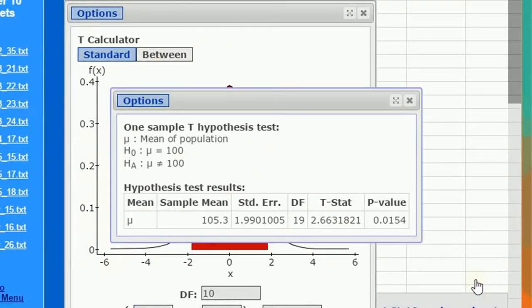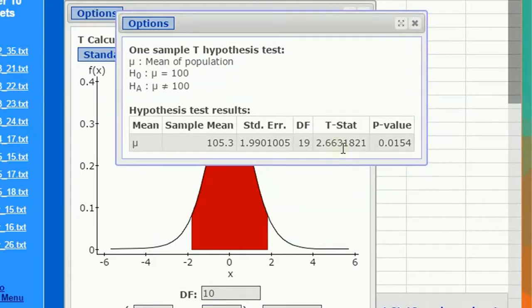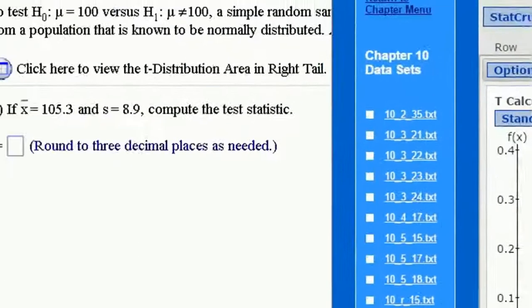Click compute. This is going to give me my output. This gives me the t-statistic and the p-value, so you can make your conclusion by the classical or the p-value approach. It's asking for the t-statistic. Let's bring it in with three decimal places, 2.663.